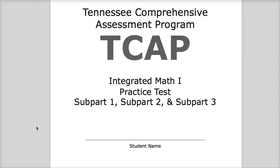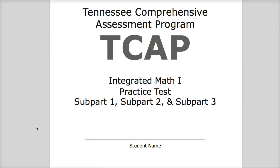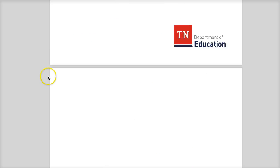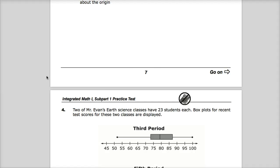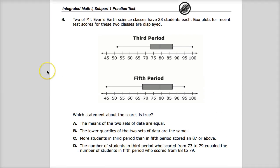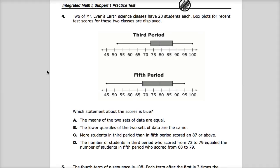Welcome. This is the TCAT practice test for Integrated Math 1. We're in subpart 1 right now, which means no calculators allowed, and we're on question number 4. The bummer about this is I can't just type everything in, so I'm going to have to think, well, what does it all mean?